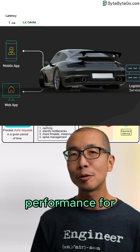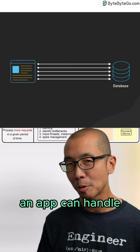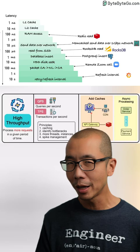Throughput measures how many requests an app can handle simultaneously. Higher throughput allows more users at once without issues. Here's the catch.